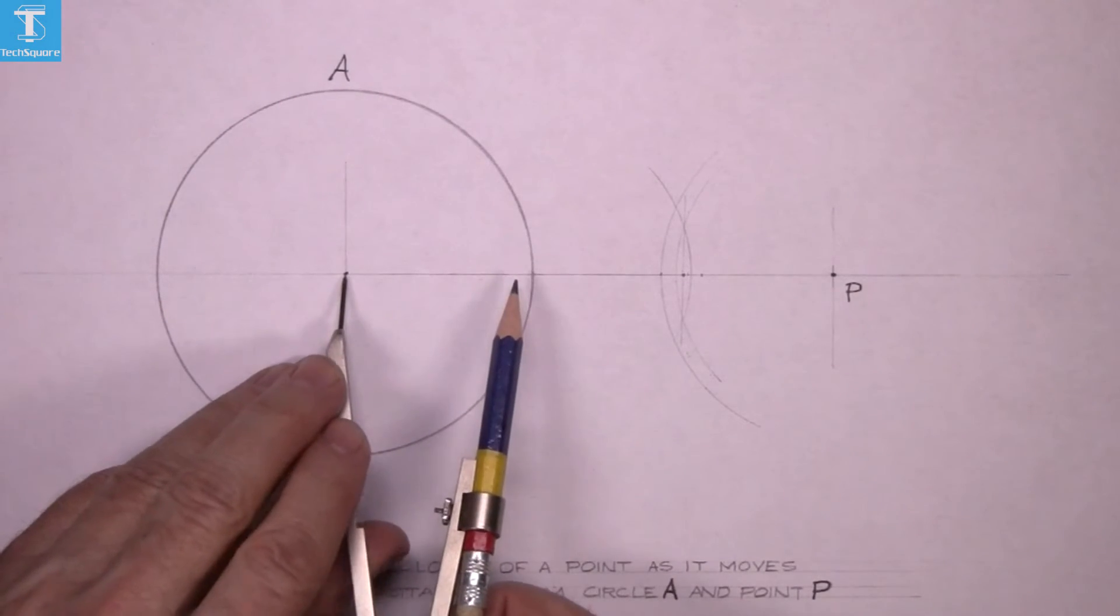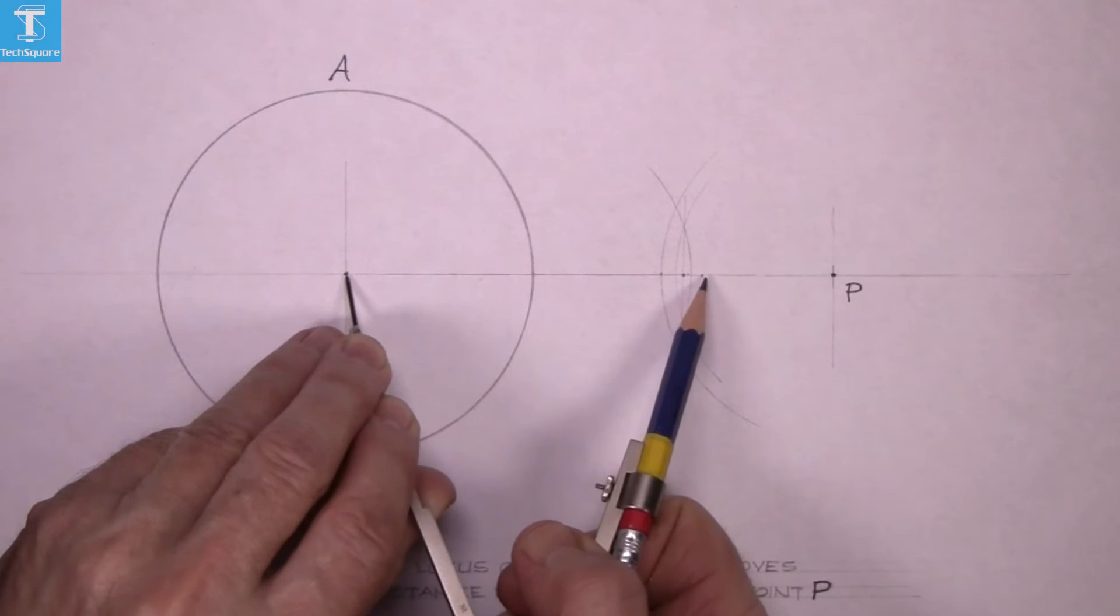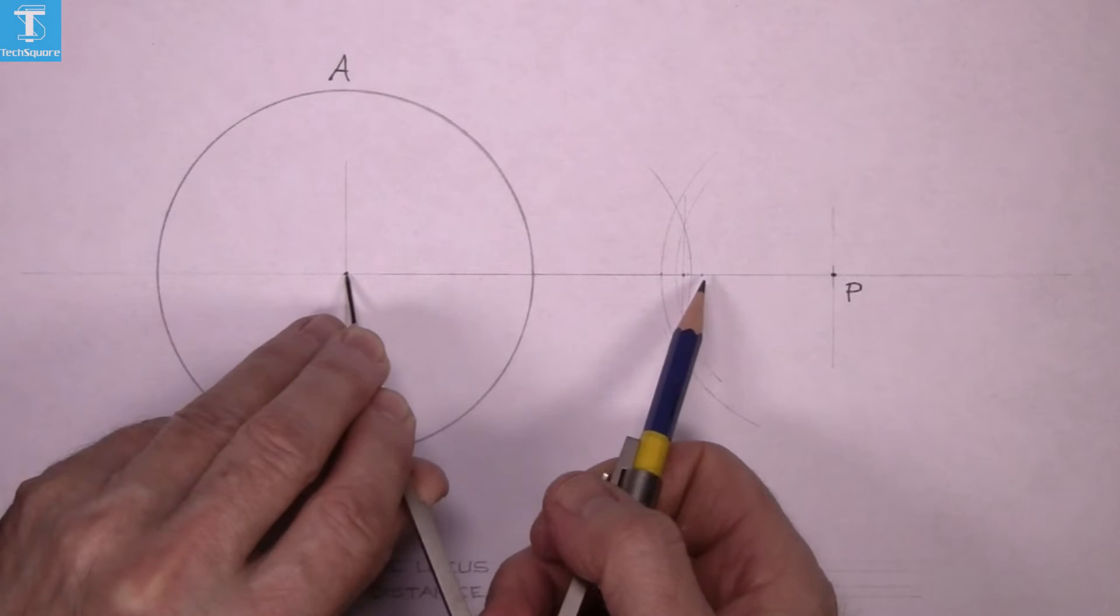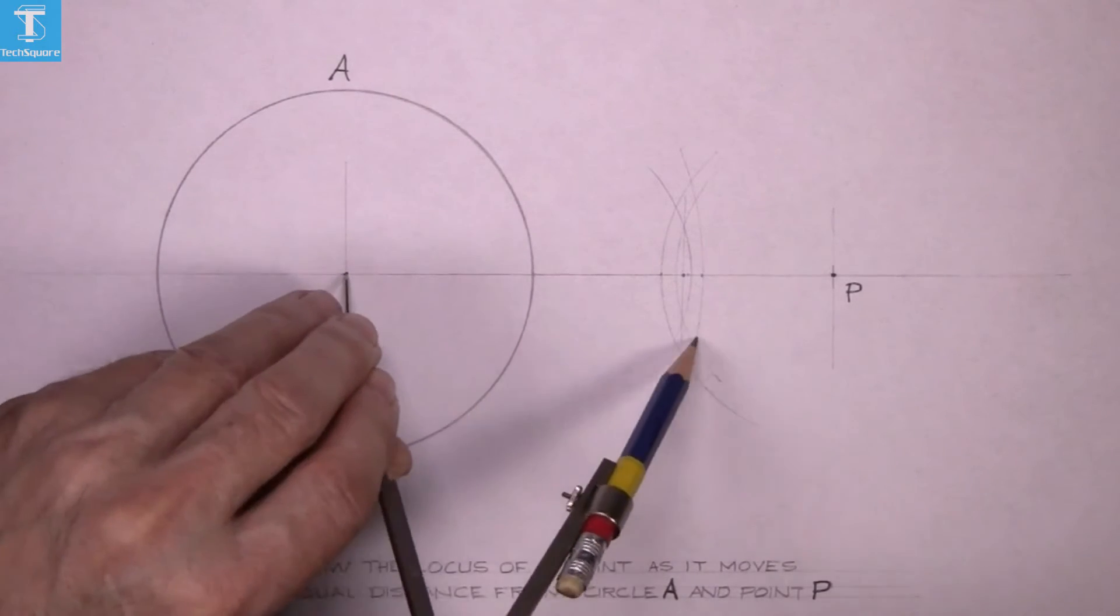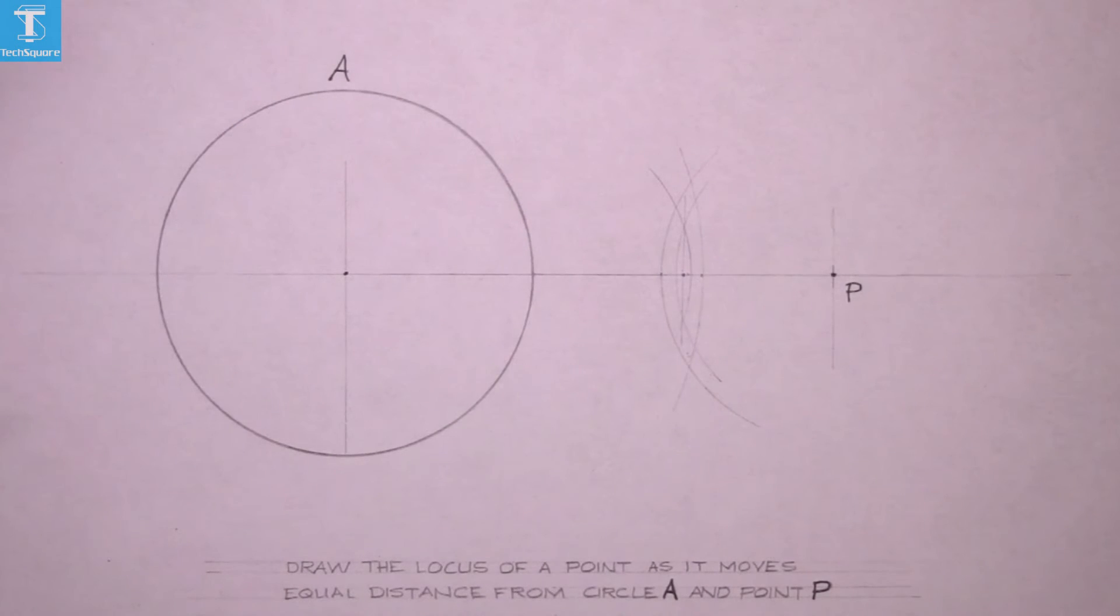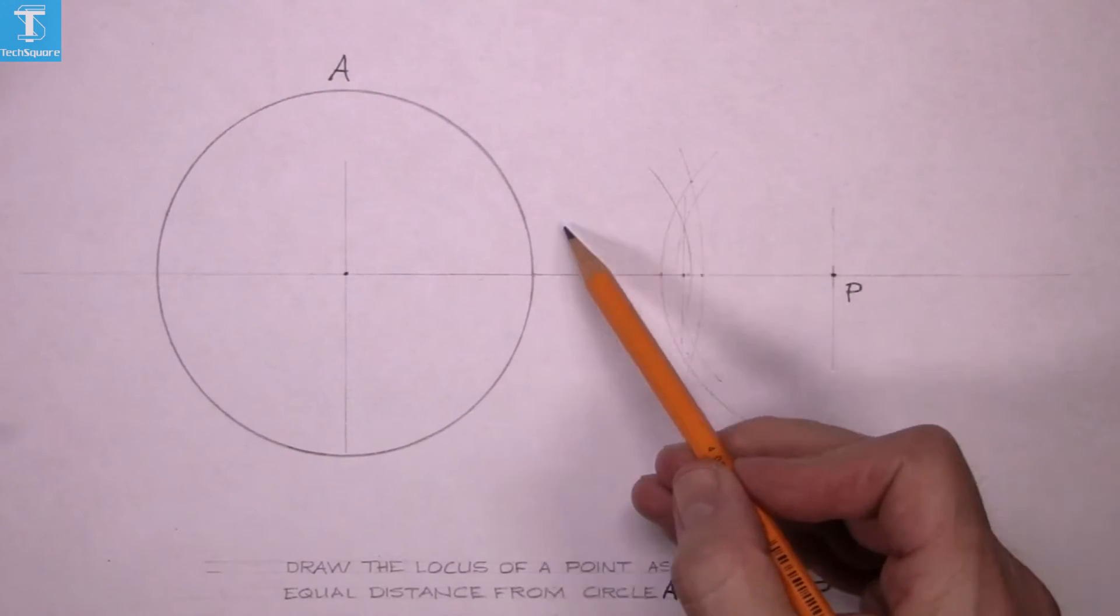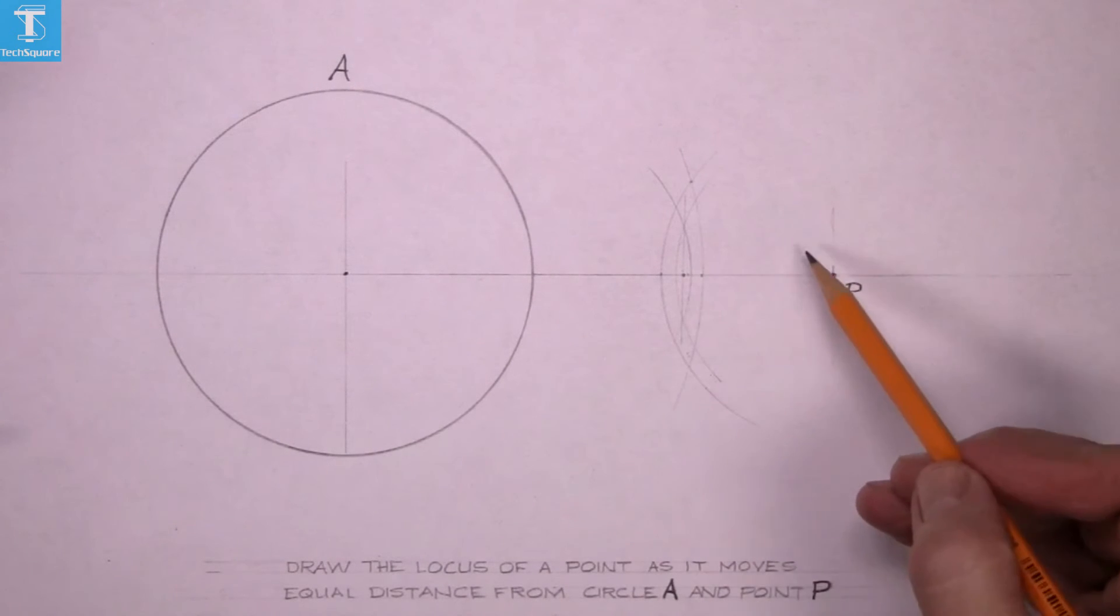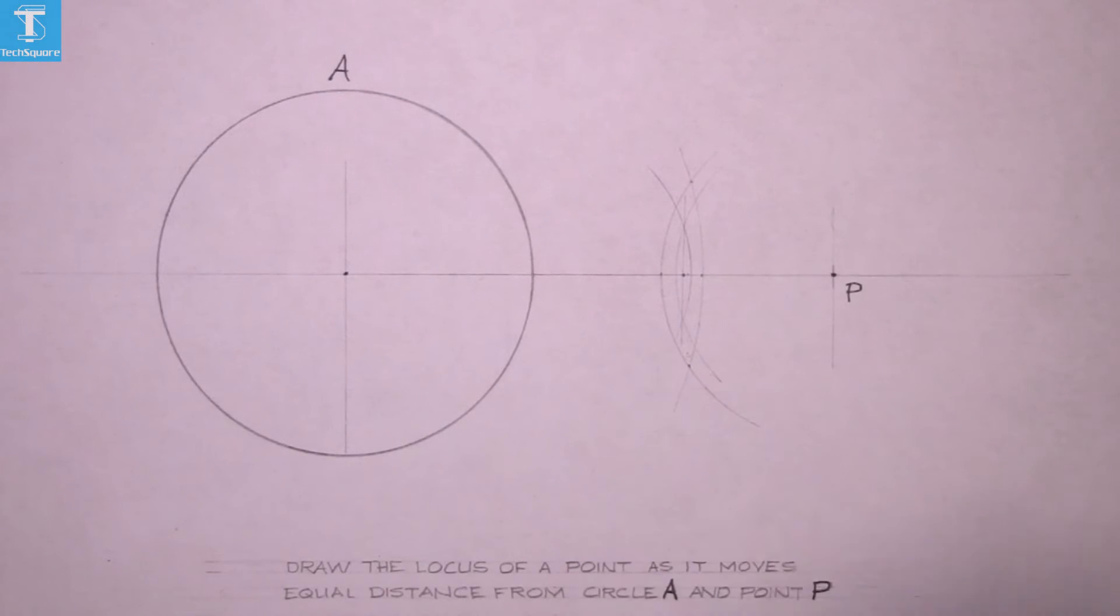And then from the center of the circle, and make sure it's the center of the circle, you set to the one the other side of the midpoint and draw an arc. Now those points you have found, that point there is the same distance from P and from the circle, and the same down here at the bottom.